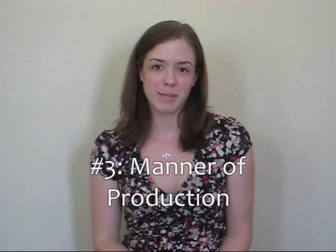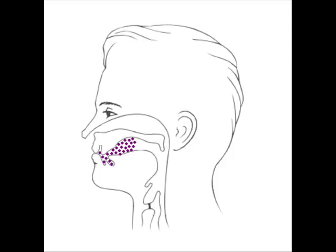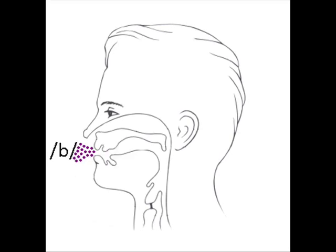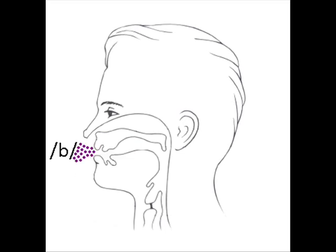Third, phonemes can be divided into groups based on the manner in which they're produced in the vocal tract. The first group are stops. These are created when you stop a pocket of air behind a structure in your vocal tract — for example, your lips — and then the air explodes out. That's why stops are also called plosives. In this case, you would get the sound 'b'.